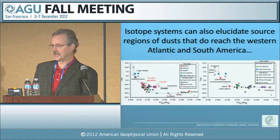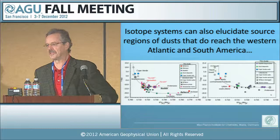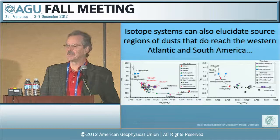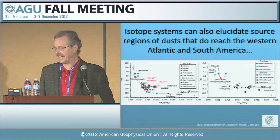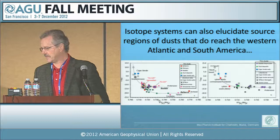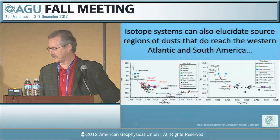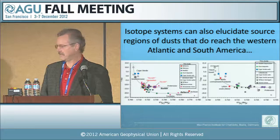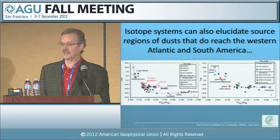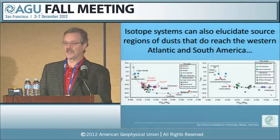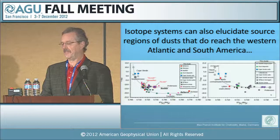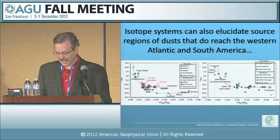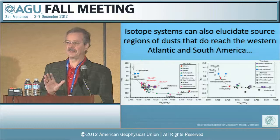Another interesting development is: where does the material in Africa actually come from that we see being transported? We can use the same isotope systems — here the strontium isotope plot, neodymium versus strontium isotopes — and we get a quite rich amount of information on the isotopic composition of materials from Africa. Ongoing work is establishing a database on the isotopic composition of African rocks and matching that to the isotopic composition of dusts collected in various places in Africa, off Africa, and in the Caribbean region.